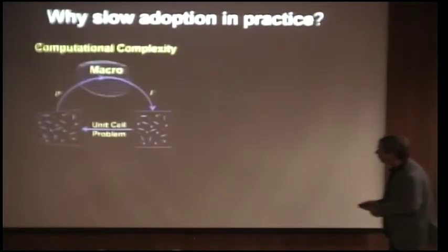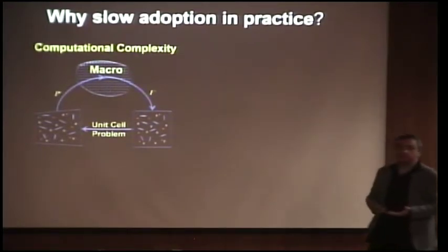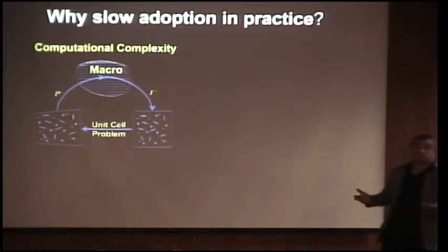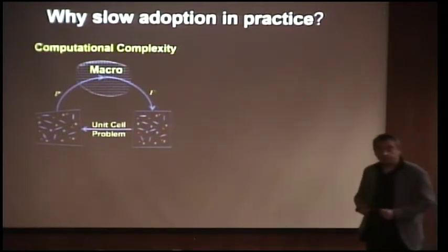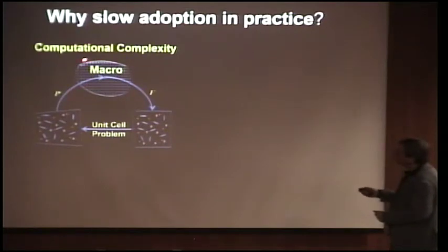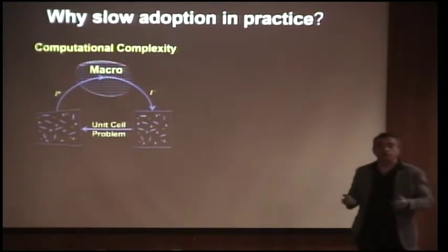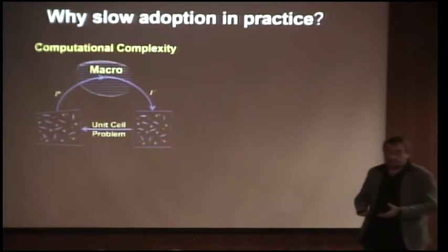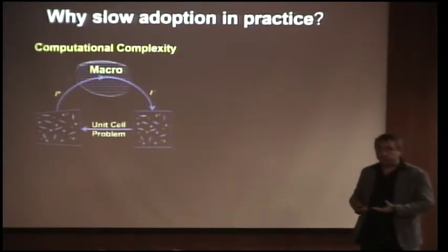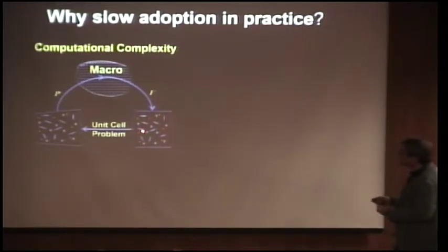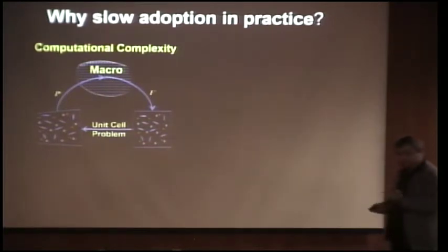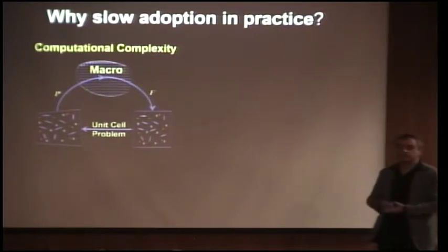So the question is: why has there been such a slow adoption of technology that academia is really very excited about, but industry is not adopting? I would mention a couple of things. First, there is tremendous computational complexity. If you look at a nonlinear problem — say you want to predict failure of systems — think about the macro problem being the whole airplane and a material point made of a complex microstructure.